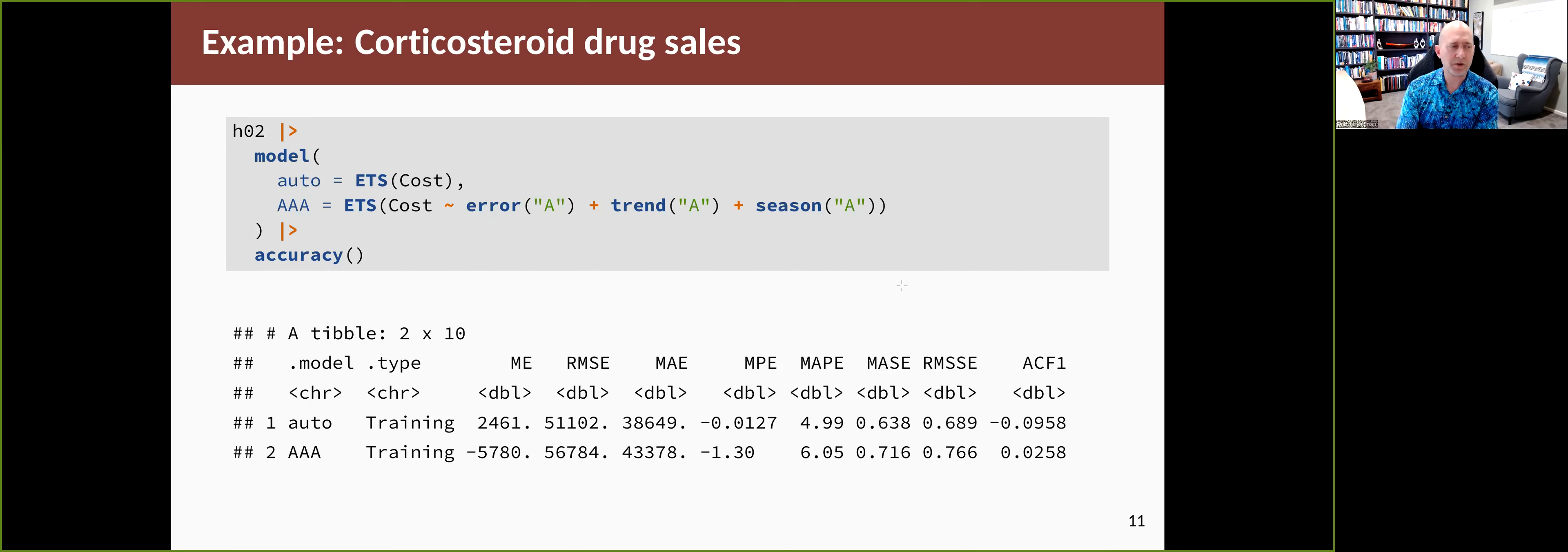If I take the two models—the automatically chosen model and the AAA model that we guessed from the data—we can compare the results. I'm only comparing these results on the training set because I haven't held out any data to look at in a test set. But it's showing us that on the training set, the automatically chosen model is substantially better fit than the guessed AAA model, both in terms of root mean squared error and any other measure.